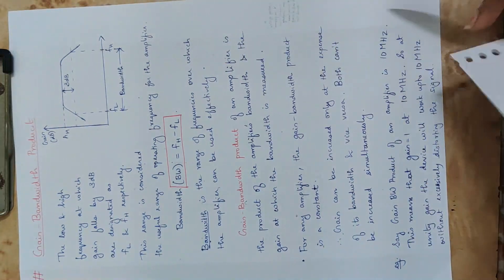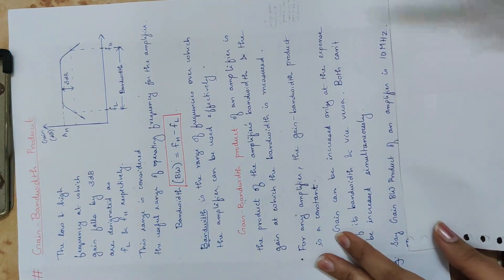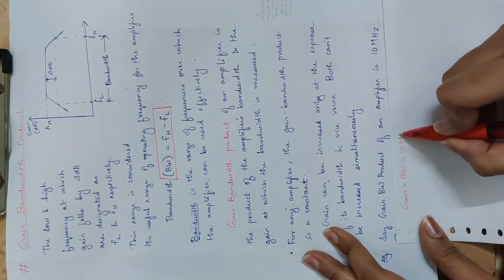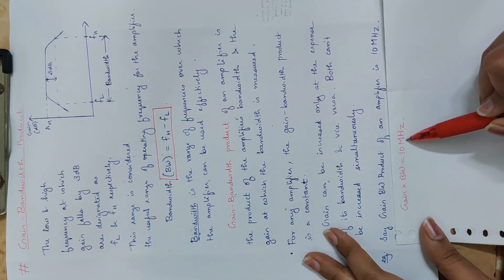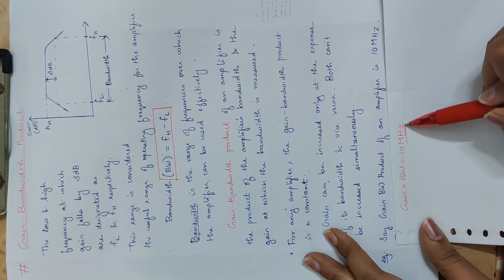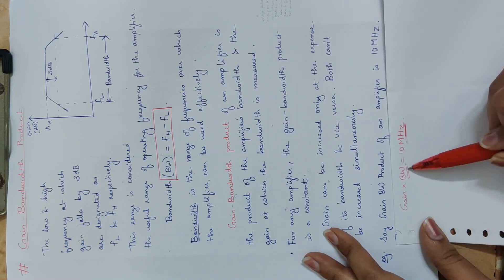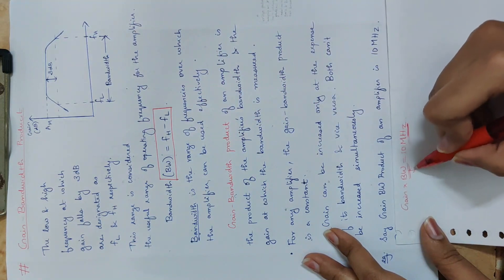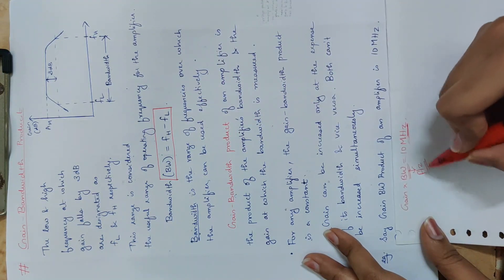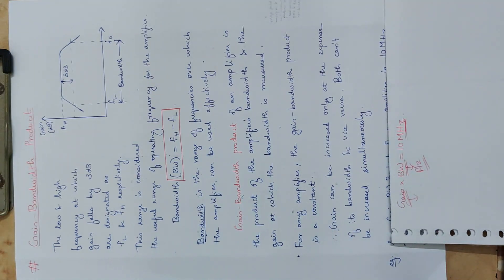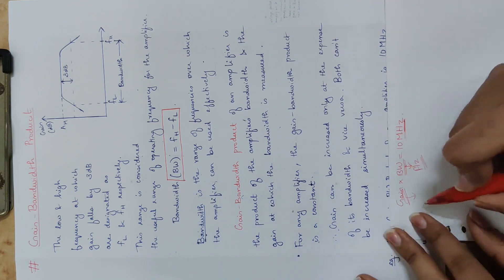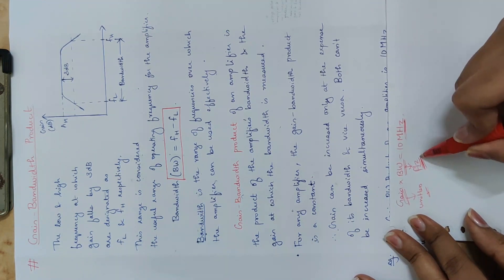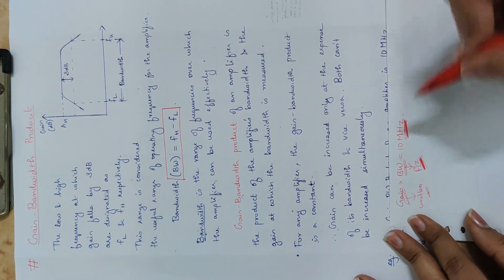For example, say the gain bandwidth product of an amplifier is 10 MHz. The product of gain into bandwidth equals 10 MHz. Note that bandwidth has units of Hz (frequency), while gain is unitless — it is output voltage divided by input voltage. So gain bandwidth product has units of Hz.